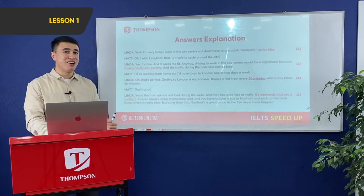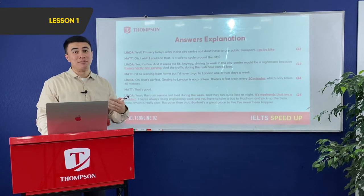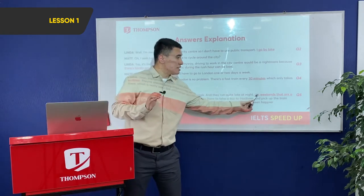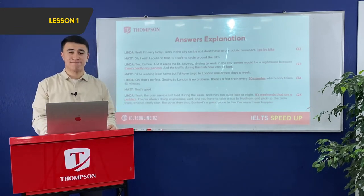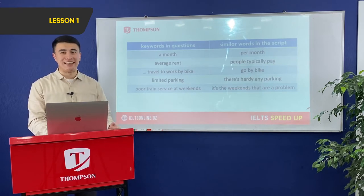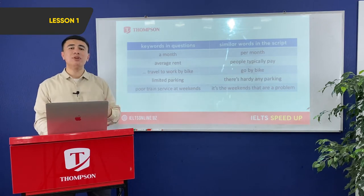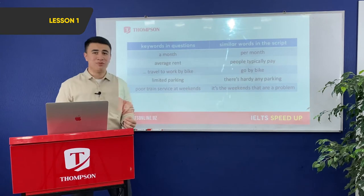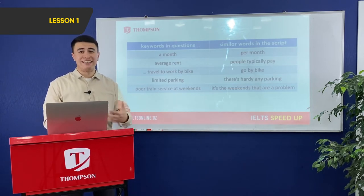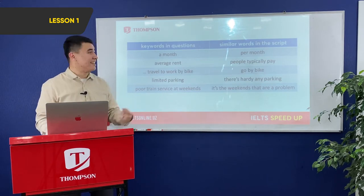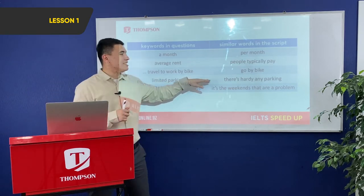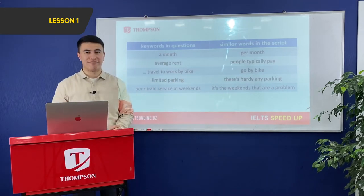Now let's look at the script of the audio for the form completion. The key answers are: 850 pounds per month; by bike; hardly any parking; fast train every 30 minutes; and weekends. At the end of every listening practice at home, you should make a keywords table — in one column the words from your booklet, in the next column the paraphrased words used in the audio. For example, 'a month' was paraphrased as 'per month,' and 'limited parking' as 'there is hardly any parking.'